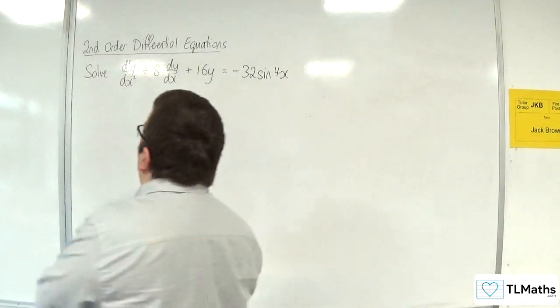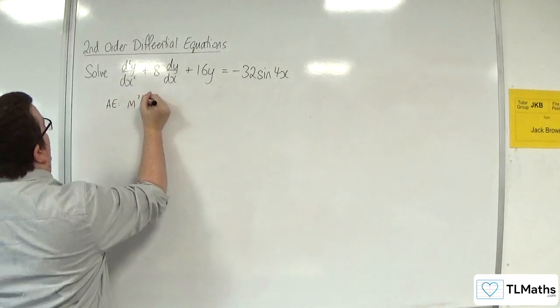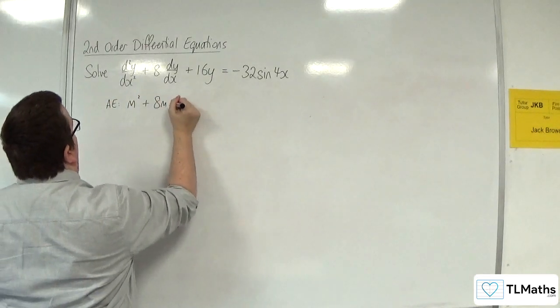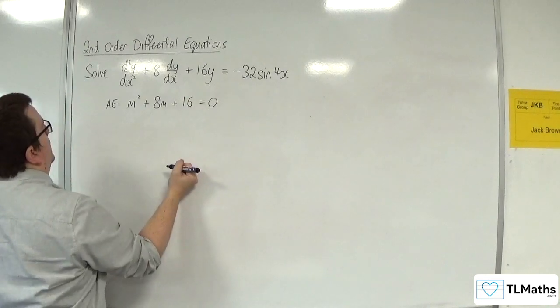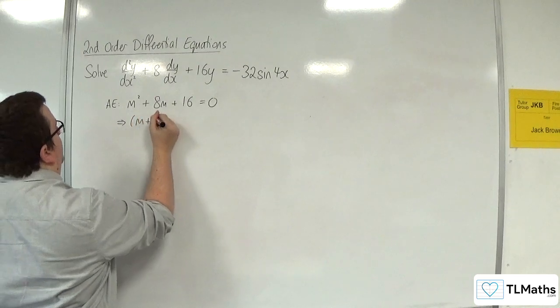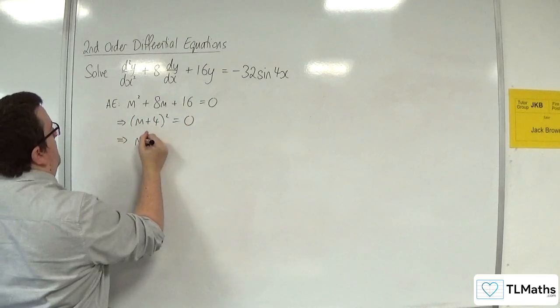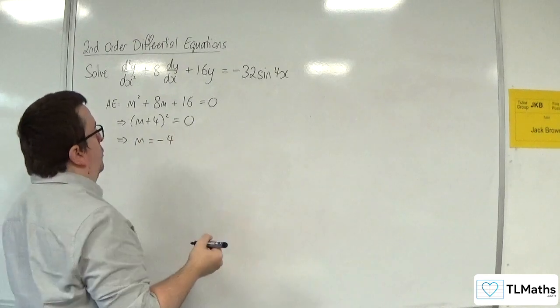First of all the auxiliary equation would be m² + 8m + 16 = 0. Now this is a perfect square so (m + 4)² = 0. So that means that m must be equal to -4.